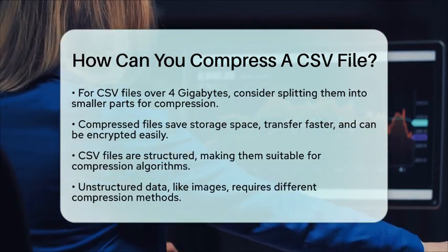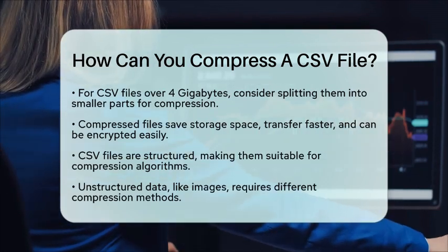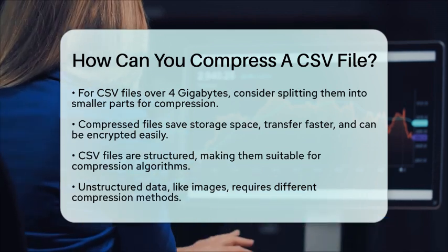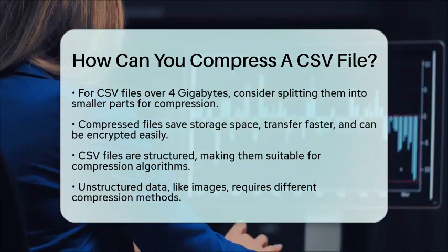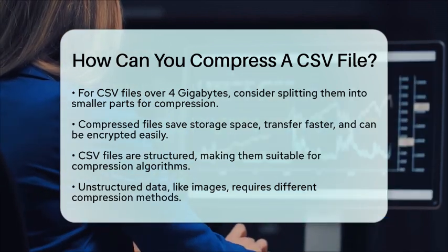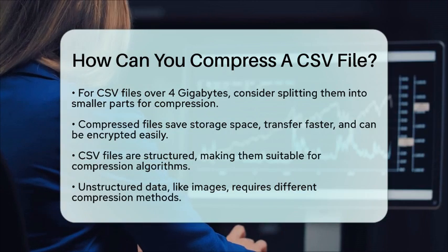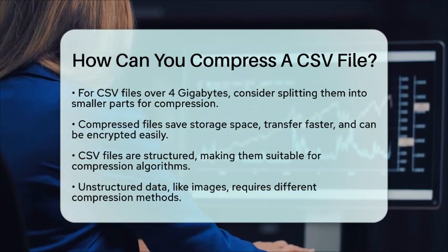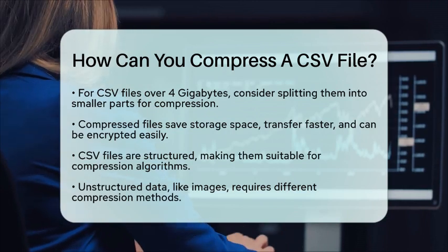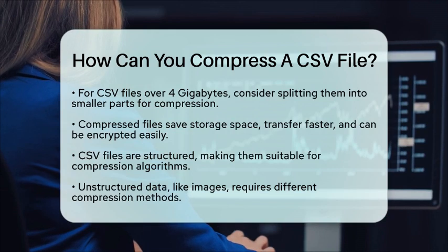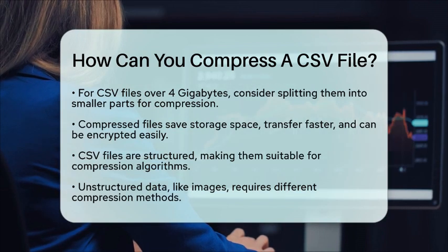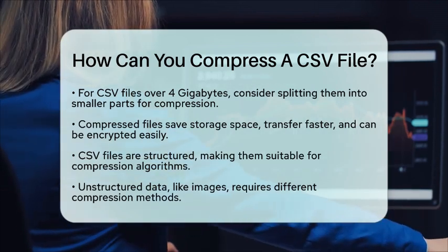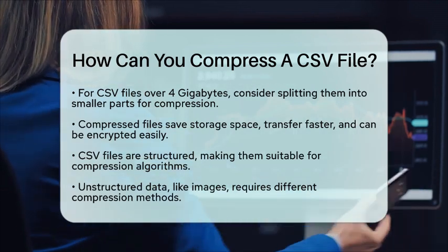CSV files usually contain structured data organized into rows and columns. This structure makes them ideal for compression using algorithms like gzip or zip. In contrast, unstructured data such as images may require different methods for effective compression.